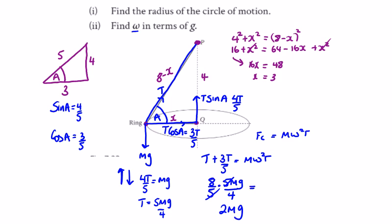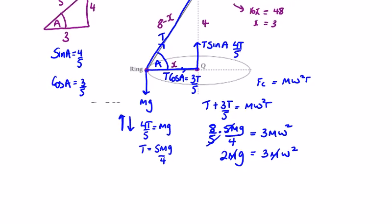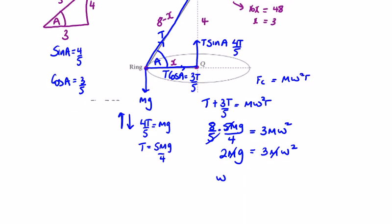So 2mg equals 3mω². Dividing by m earlier, we get ω² equals 2g over 3.